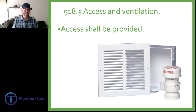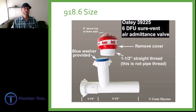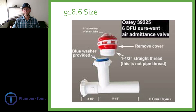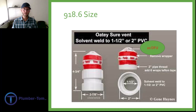918.5 talks about access and ventilation. All of these would have to be accessible later and installed in a location where air can easily flow into the system as needed. 918.6 talks about the size of the air admittance valve. These are rated for different numbers of drainage fixture units, so wherever you install one you'd want to make sure it can handle the drainage fixture units for the fixtures it will vent. Some can only handle six drainage fixture units; some can handle as many as 20 or more. The valve will say right on the packaging how many drainage fixture units it can handle.